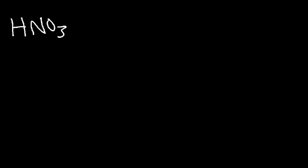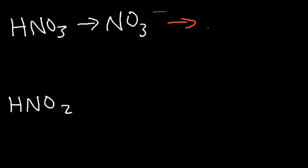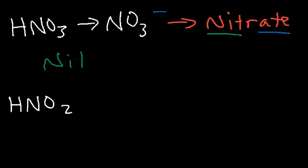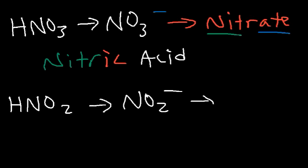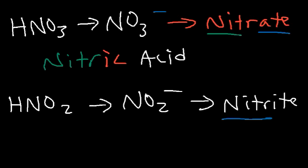How would you name HNO₃ and HNO₂? HNO₃ contains the polyatomic ion nitrate. So we need to replace the suffix '-ate' with '-ic'. We're going to keep the 'nitr-' part and add '-ic', so it's nitric acid. HNO₂ has the polyatomic ion nitrite. We replace '-ite' with '-ous', so it's nitrous acid.